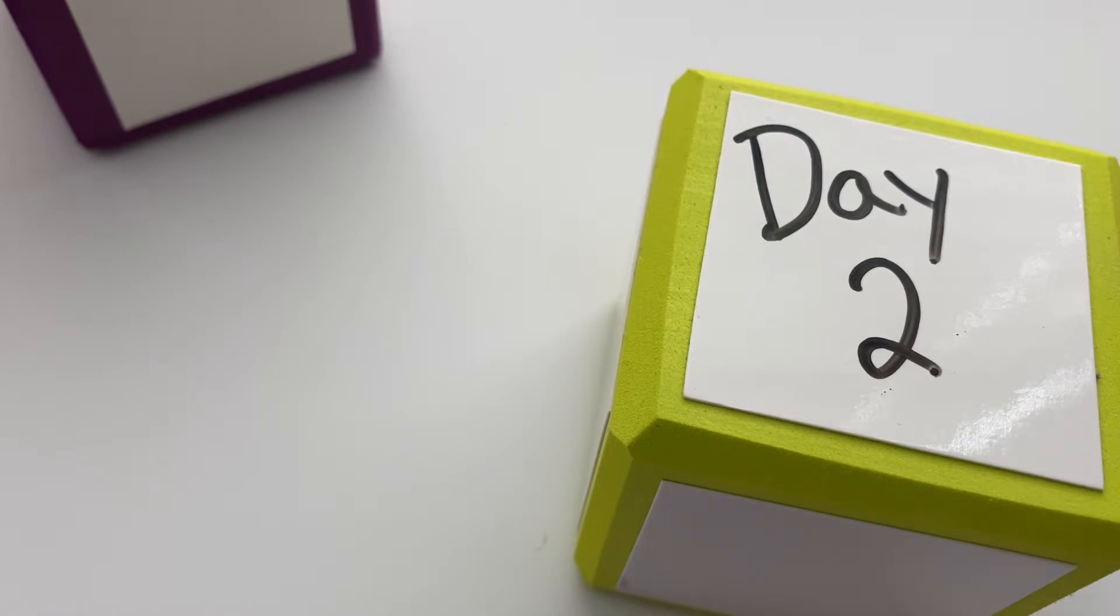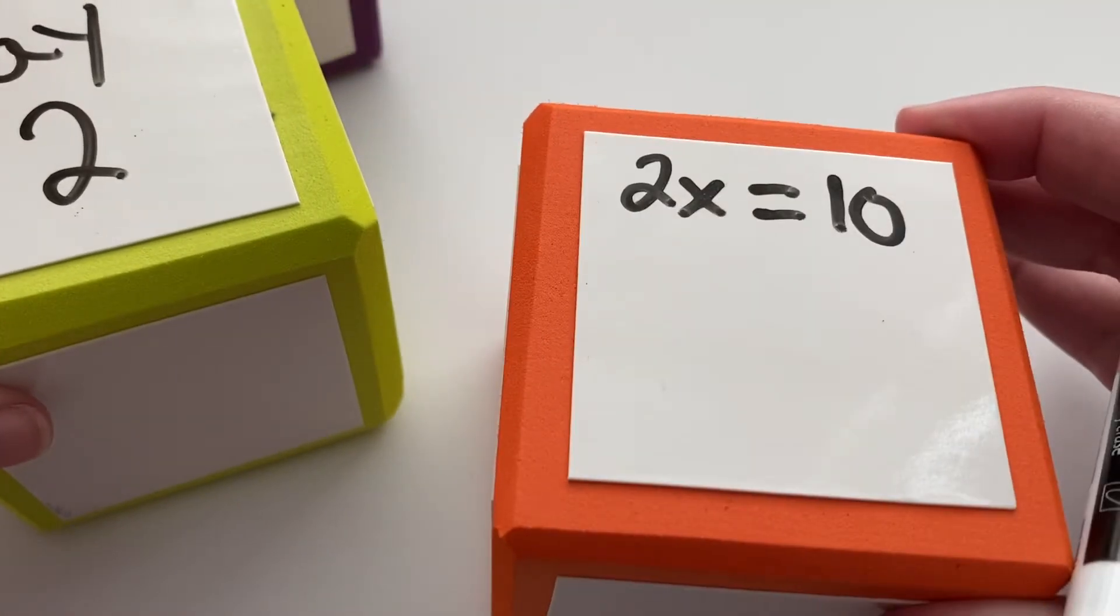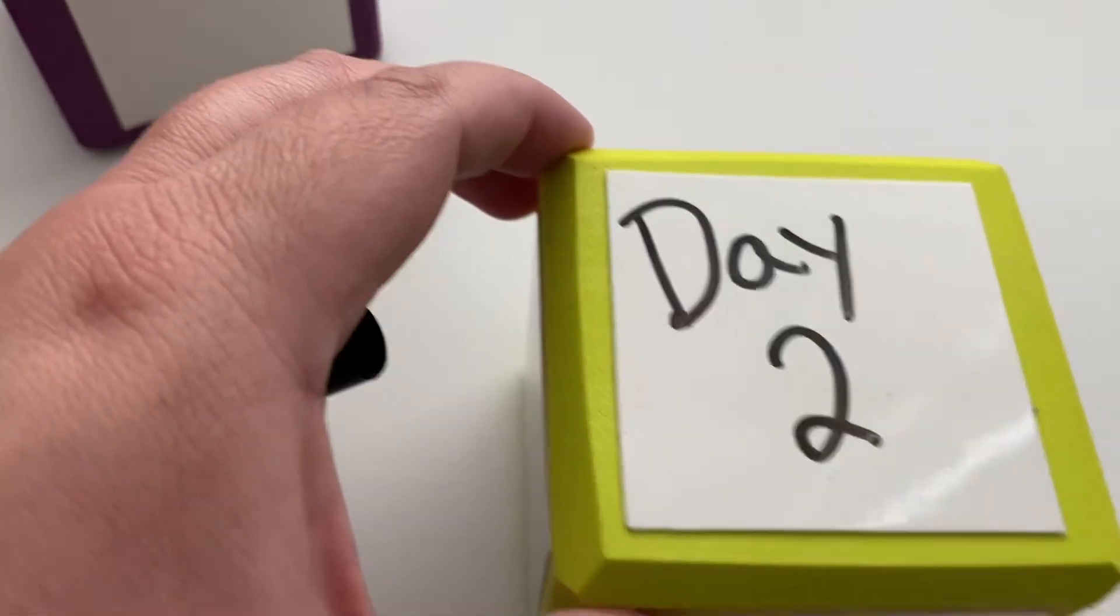First of all, we talked about how an equation means that two sides are equal to each other. Here's an example of an equation: 2x equals 10. So 2 times something is equal to 10.